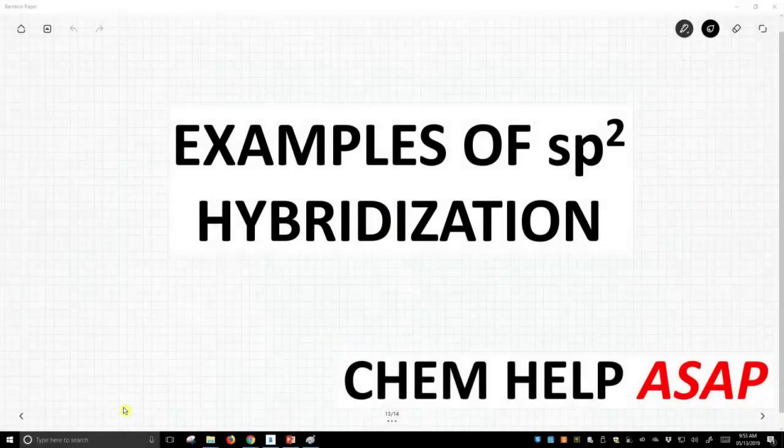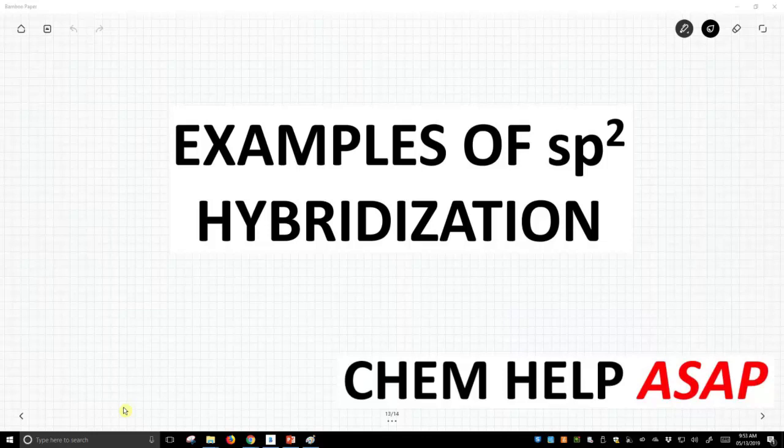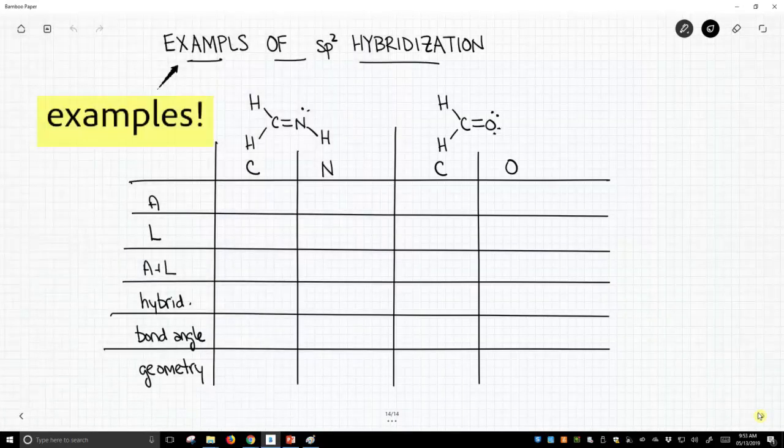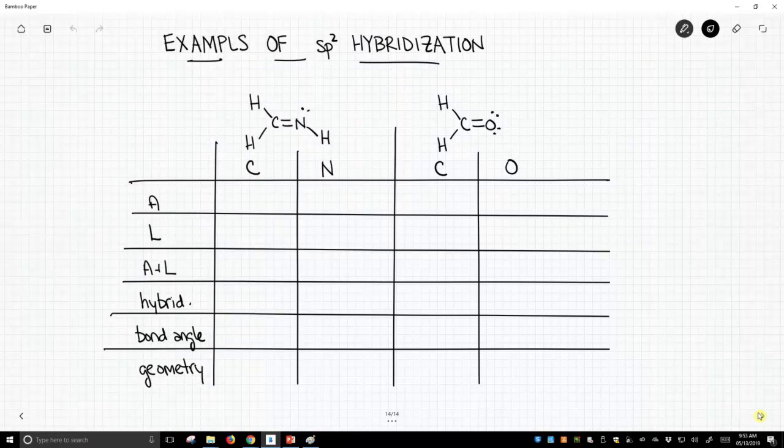Good day to you from Chem Help ASAP. We'll now see some examples of sp² hybridized atoms. Now on the screen we have a table. In this table at the top we have two molecules. One has a carbon nitrogen double bond and the other has a carbon oxygen double bond. And so we'll start with this structure on the left.